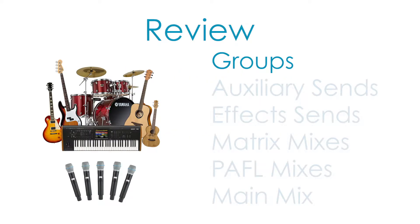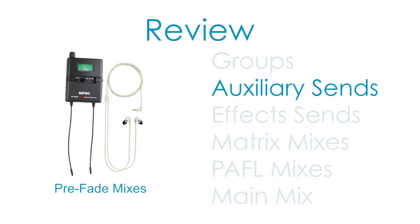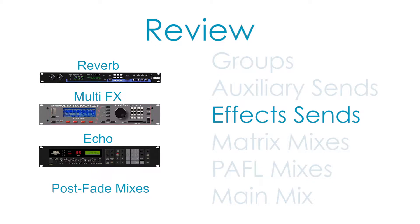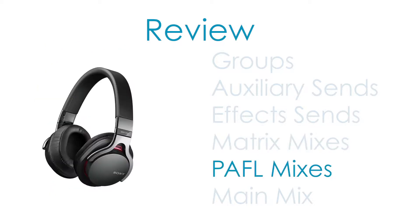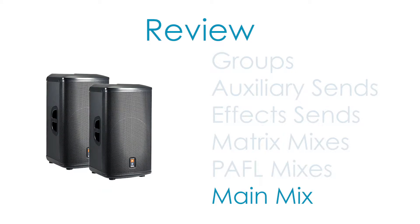In the last video, we learned about the six types of mixes. Group mixes combine audio sources for easier control and group processing. Auxiliary sends are customized mixes sent to other locations, such as in-ear monitors or floor wedges, and are typically pre-fade mixes. Effects sends are customized mixes sent to effects processors and are typically post-fade mixes. A matrix mix is a customized mix containing output mixes routed to other locations, such as the nursery or the overflow tent. A Paffle mix is a headphone mix that allows you to listen or solo one or more inputs and/or output mixes. And the main mix is a mix containing any number of inputs and/or groups routed to the main speakers.